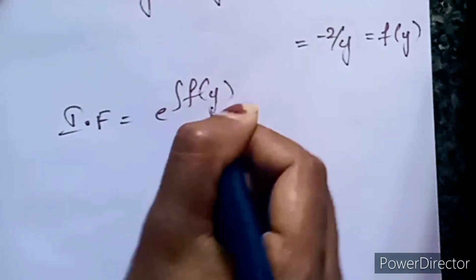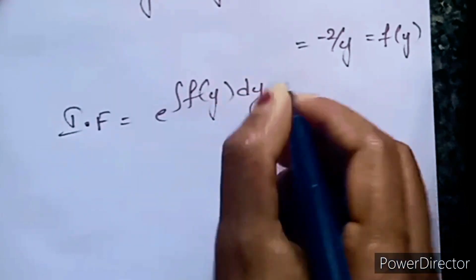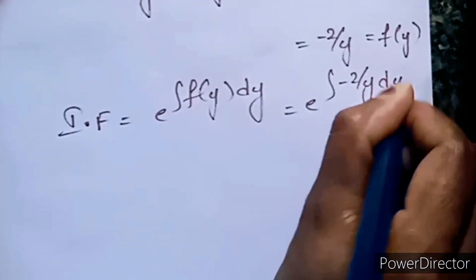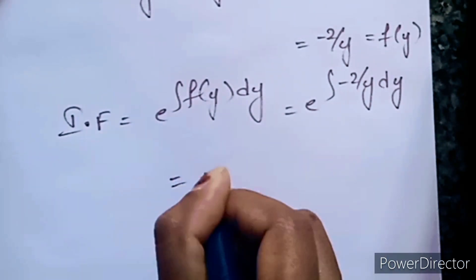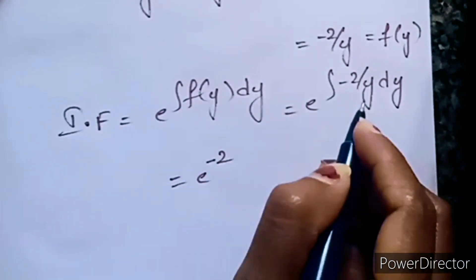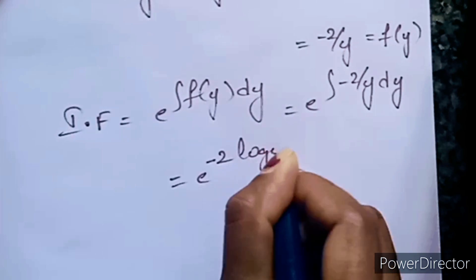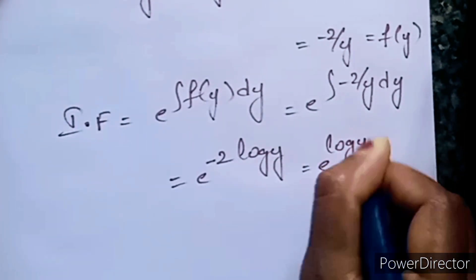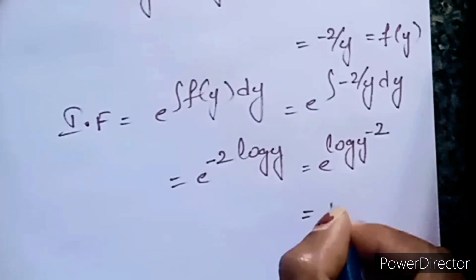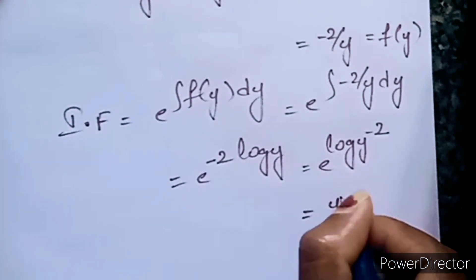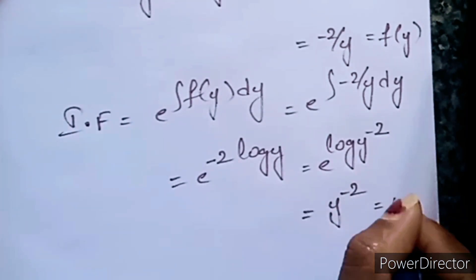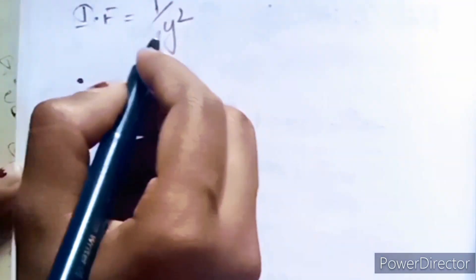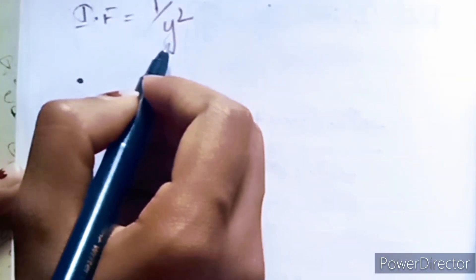Now the integrating factor equals e^(∫f(y) dy) = e^(∫−2/y dy) = e^(−2 · log y) = e^(log y^(−2)) = y^(−2), which can be written as 1/y².